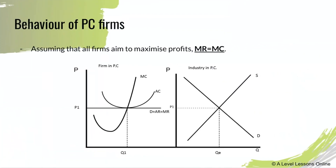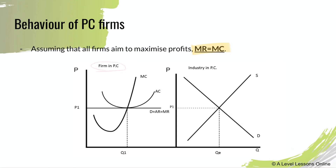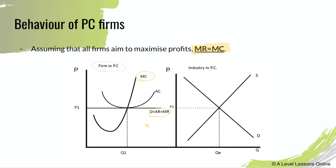For the behavior of PC firms, assuming all firms aim to maximize profit where MR equals MC, here's how the curve looks. You draw the MC curve, which curves upward due to diminishing marginal returns. Then you have the average cost (AC) curve, and your demand where AR equals MR. The AC curve determines profits: where AC intersects AR determines the type of profit earned. All three intersect at price P1, and demand is perfectly price elastic.